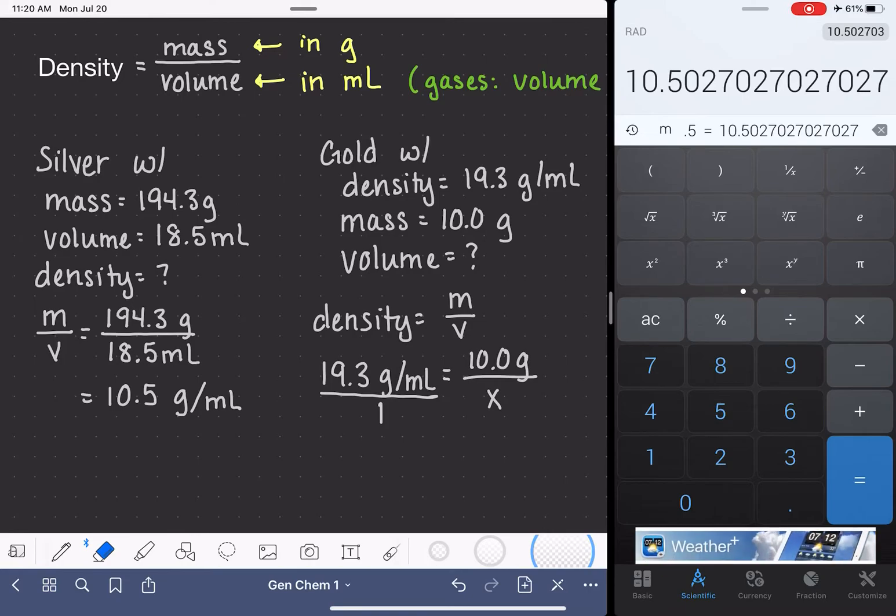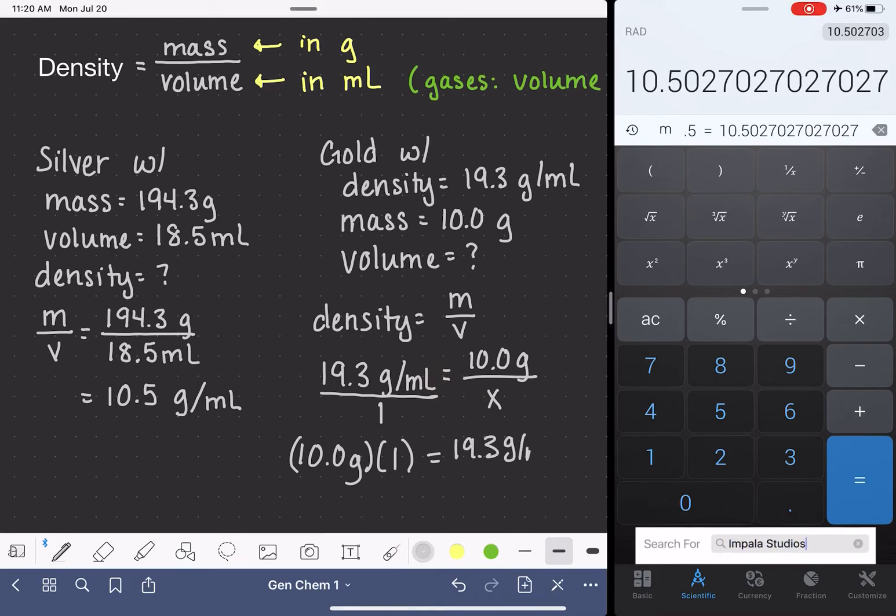We'll turn this into a fraction. So that means that we have one times 10 grams. That is equal to 19.3 times X.